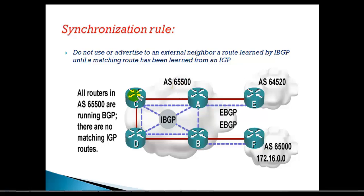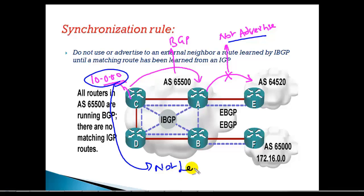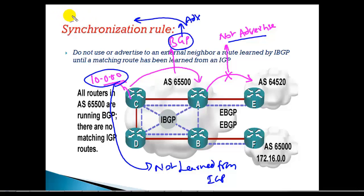...until you have the same matching route learned from your IGP protocol. For example, you have a 10-dot network on router C, and this network is getting advertised to router A through BGP using the BGP network command. Now router A is not going to advertise this route to any of its external BGP neighbors, because the synchronization rule says do not advertise the route if that network is not also learned from your IGP. So every route will be advertised only if it is advertised in both BGP and IGP.